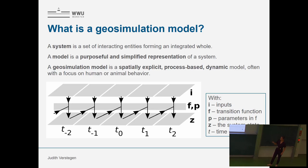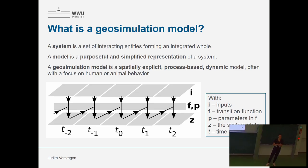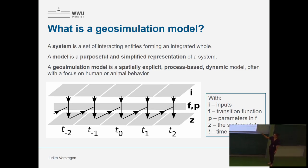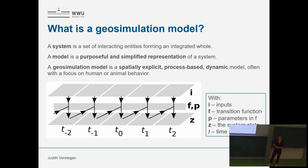Conceptually, a geosimulation model looks like this: we have inputs I for every point in time, then a transition function F that explains how inputs lead to the system state, with some parameters P. The system state at a certain point in time is also input for the next point — a kind of Markov chain process.